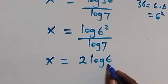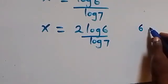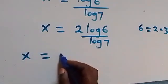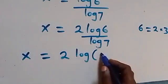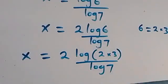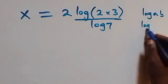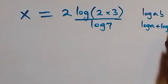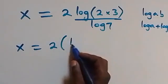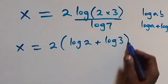Then from the power law again, the 2 can come down and we have x equals to 2 log 6 over log 7. We can also write 6 as 2 times 3, so x equals to 2 log(2 times 3) over log 7. From the product law of logarithm, log(a times b) equals log a plus log b.